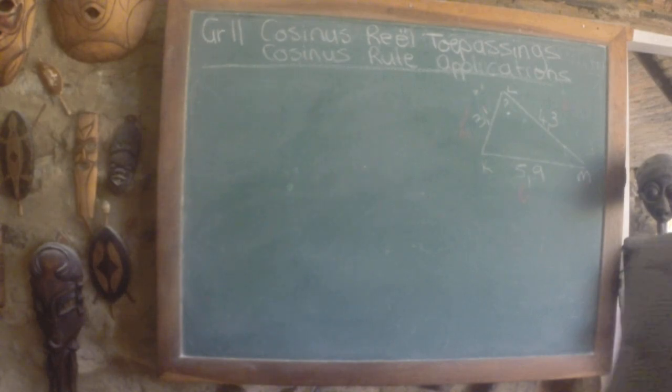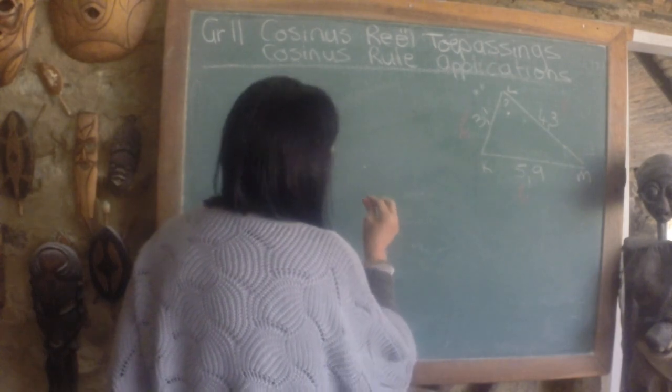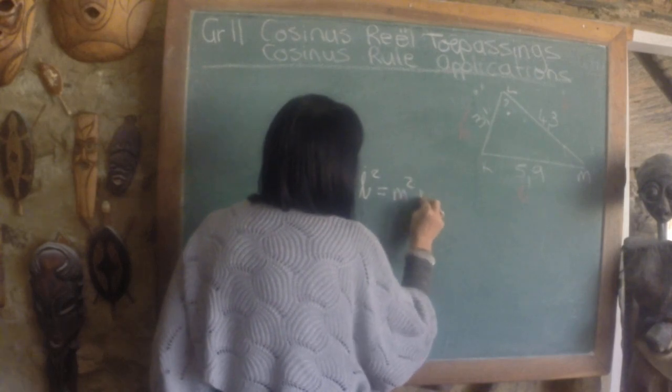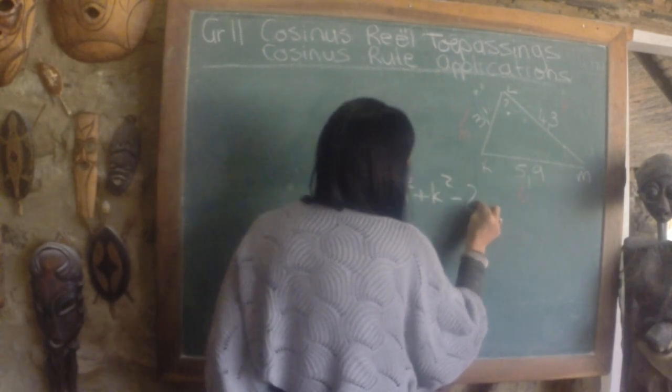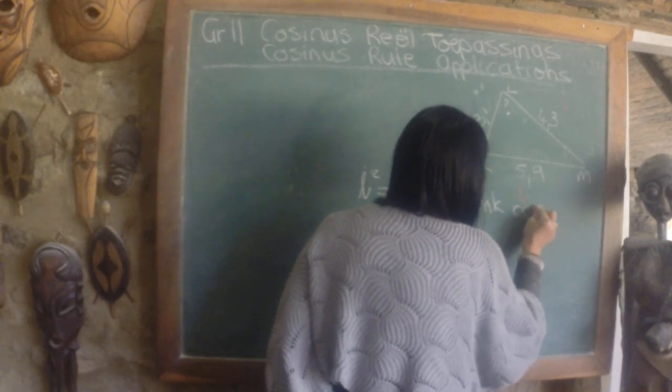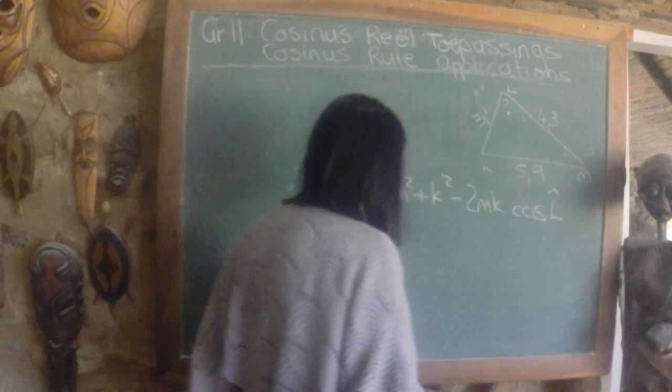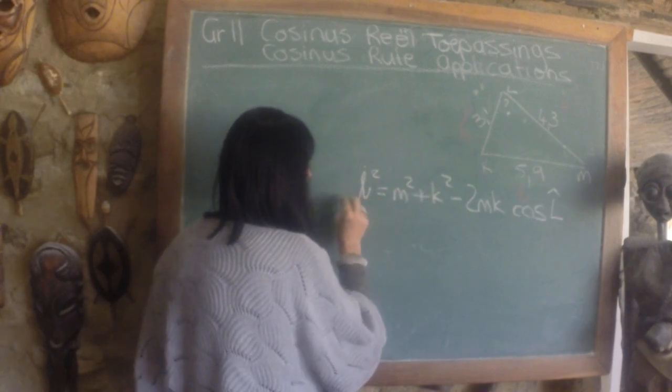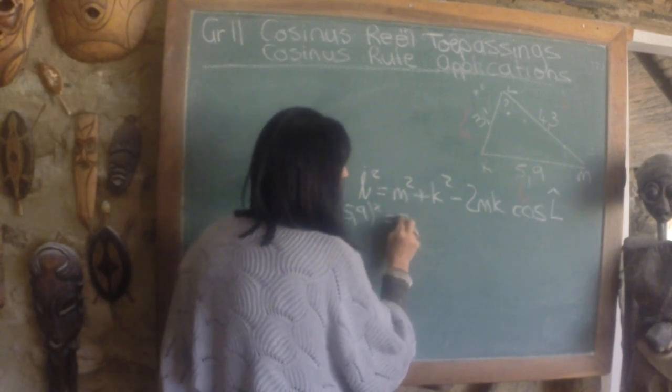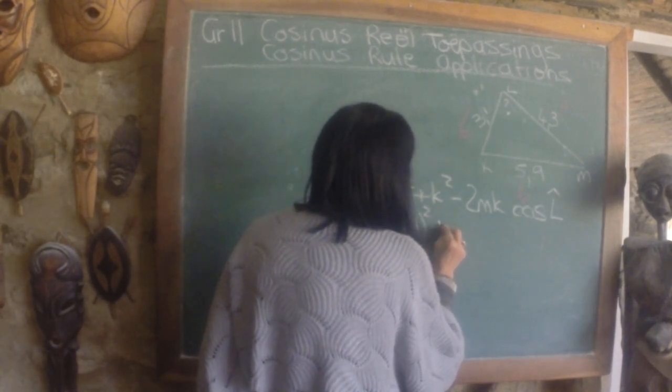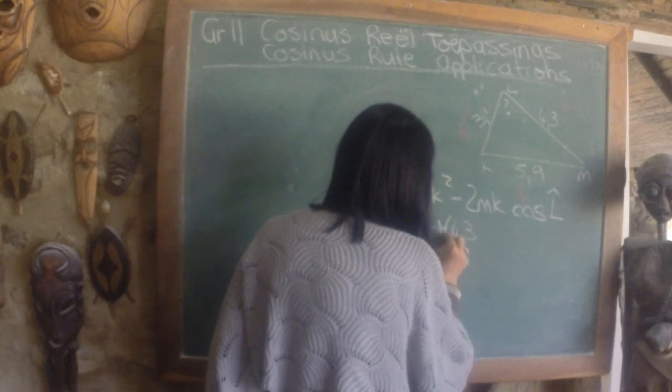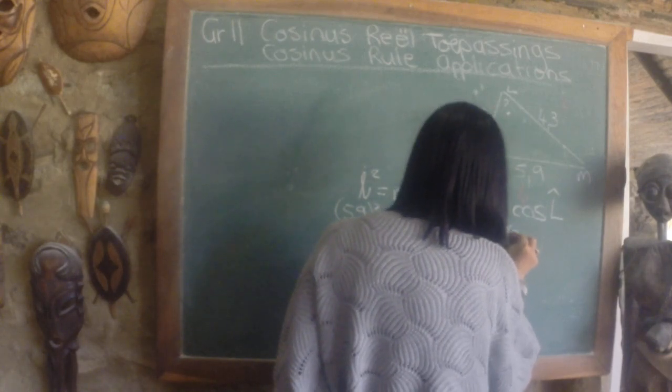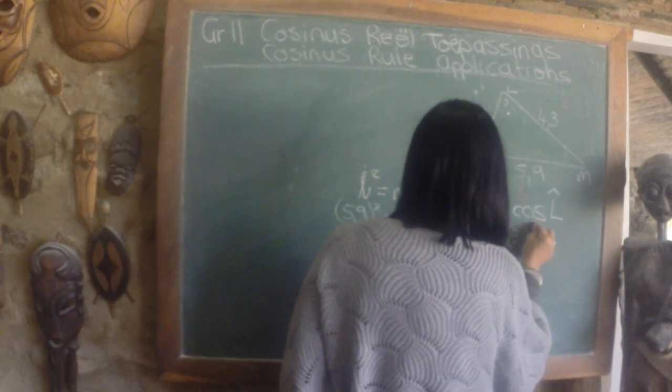Let's write down our rule, we've got to start with small L square equals M square plus K square minus 2Mk, the cos of big L. So again, we're going to do substitution. L square is going to be 5.9 square equals M square, 3.1 square plus K square, 4.3 square